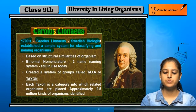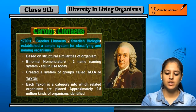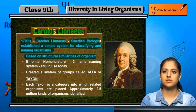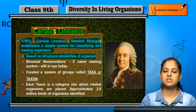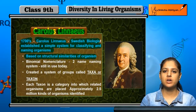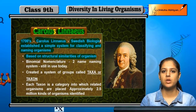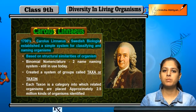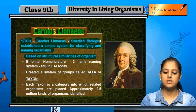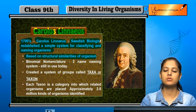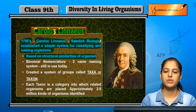The system he established was based on structural similarities of organisms — organisms that had the same characteristics in their structure. He based his classification system on these structural similarities.